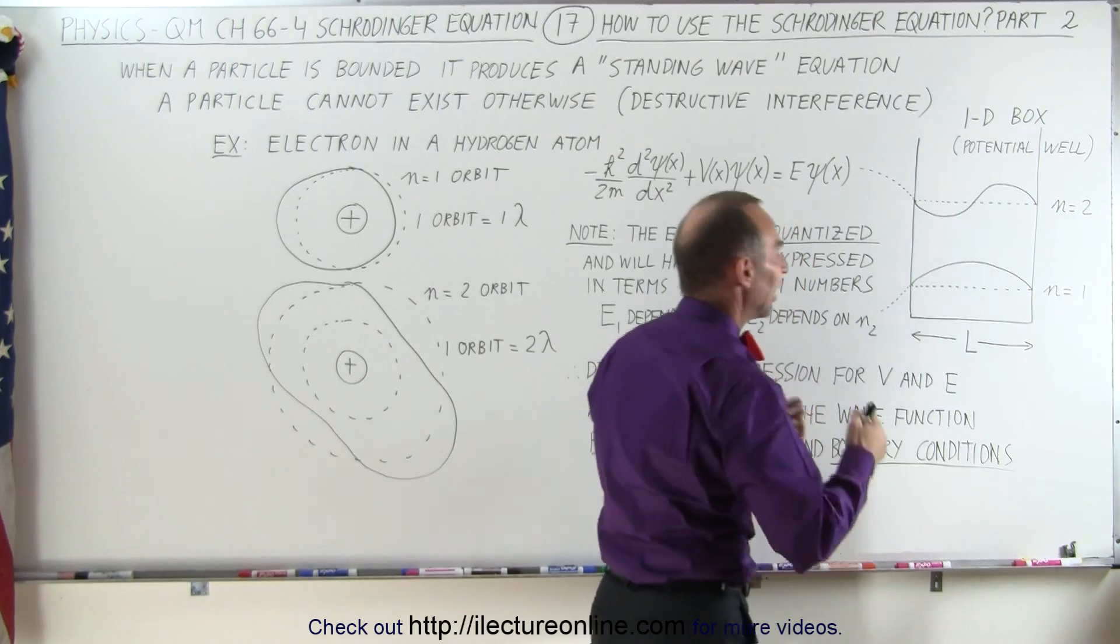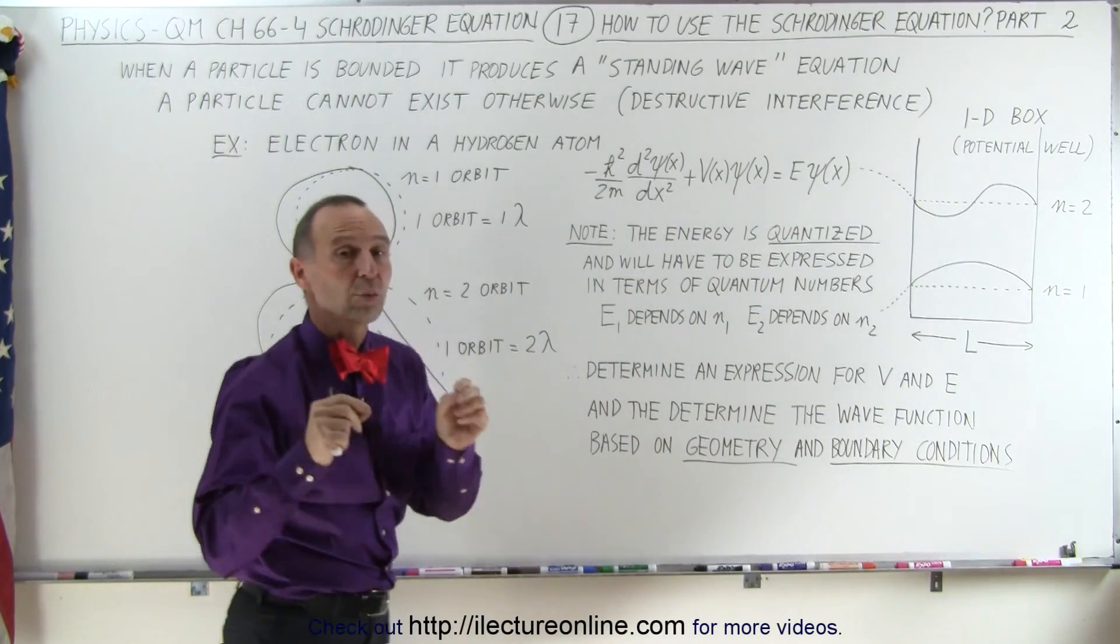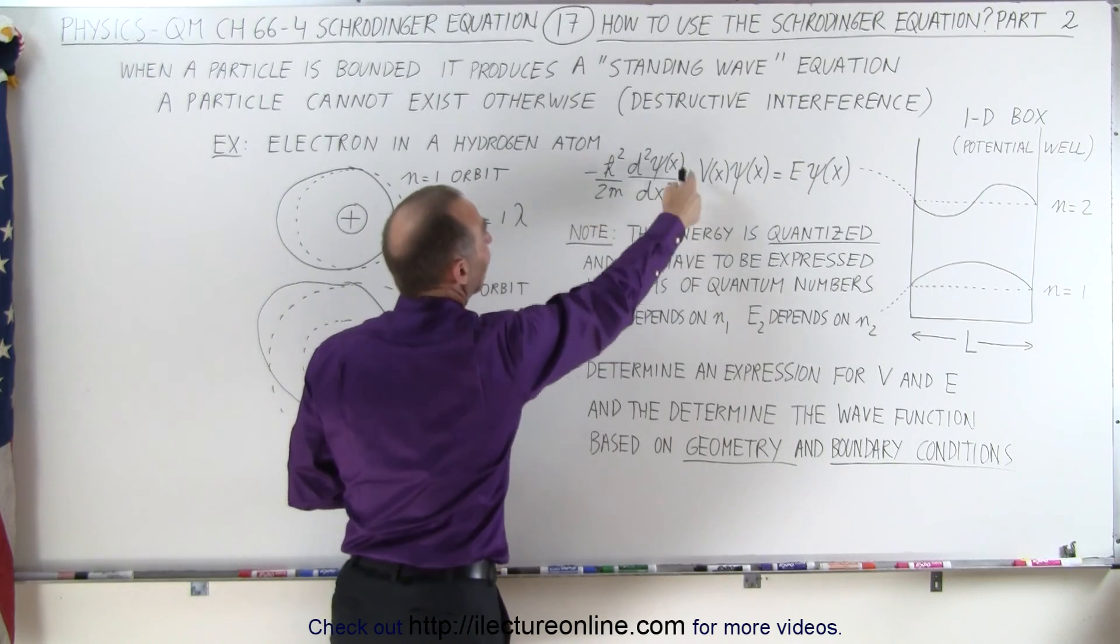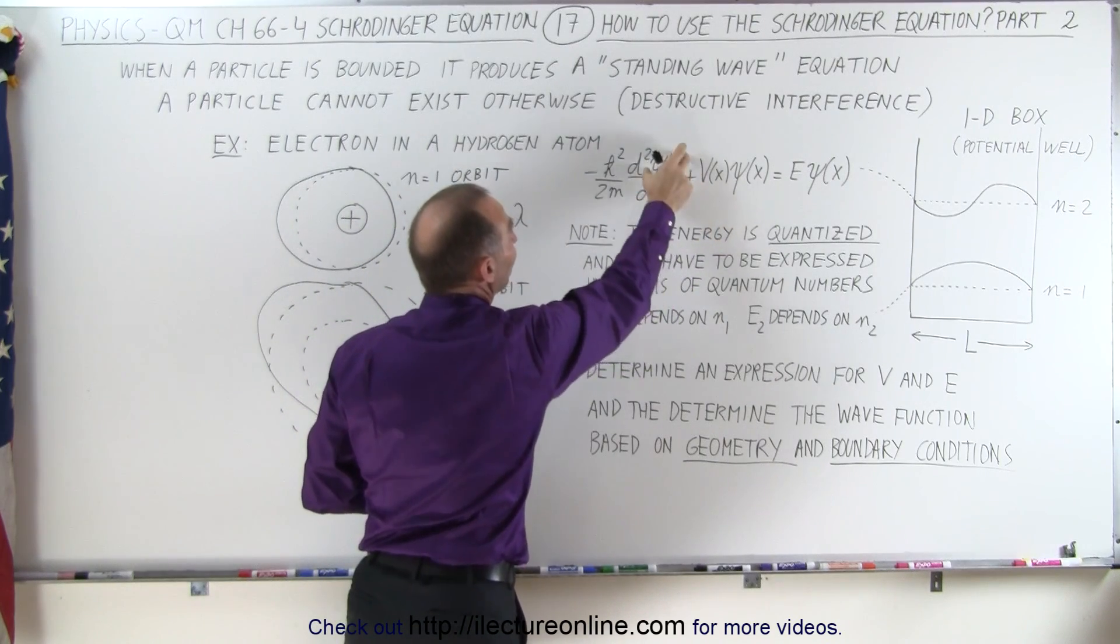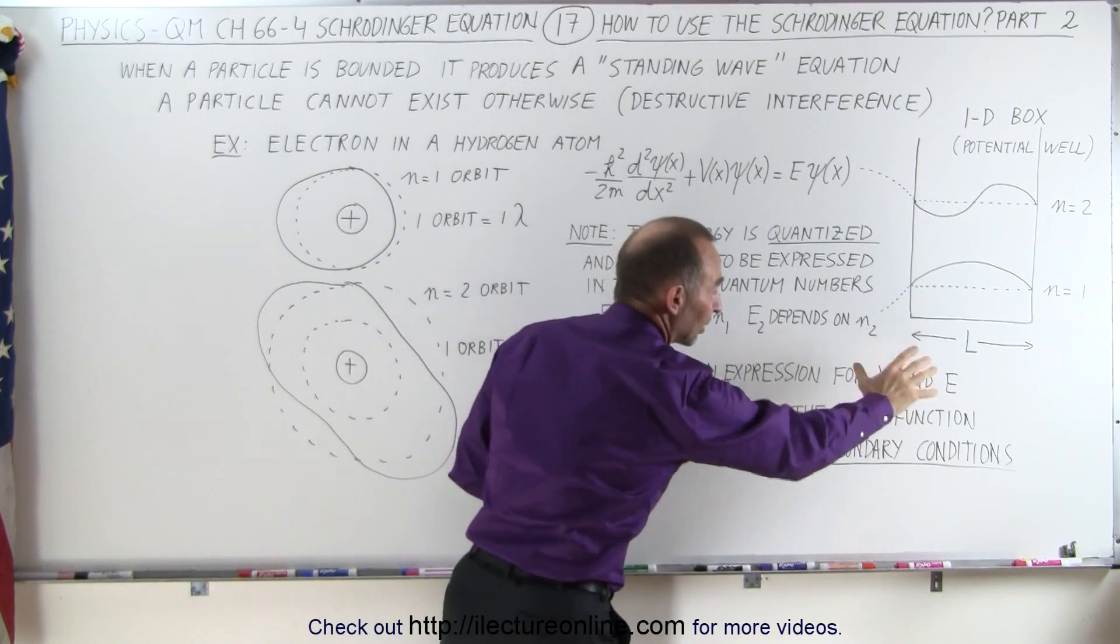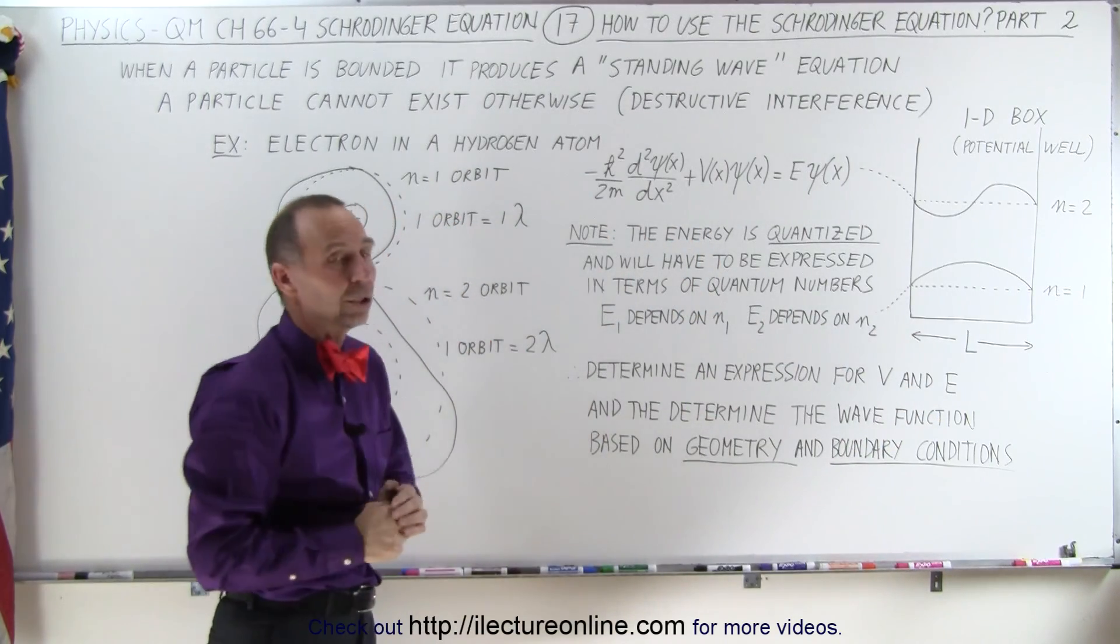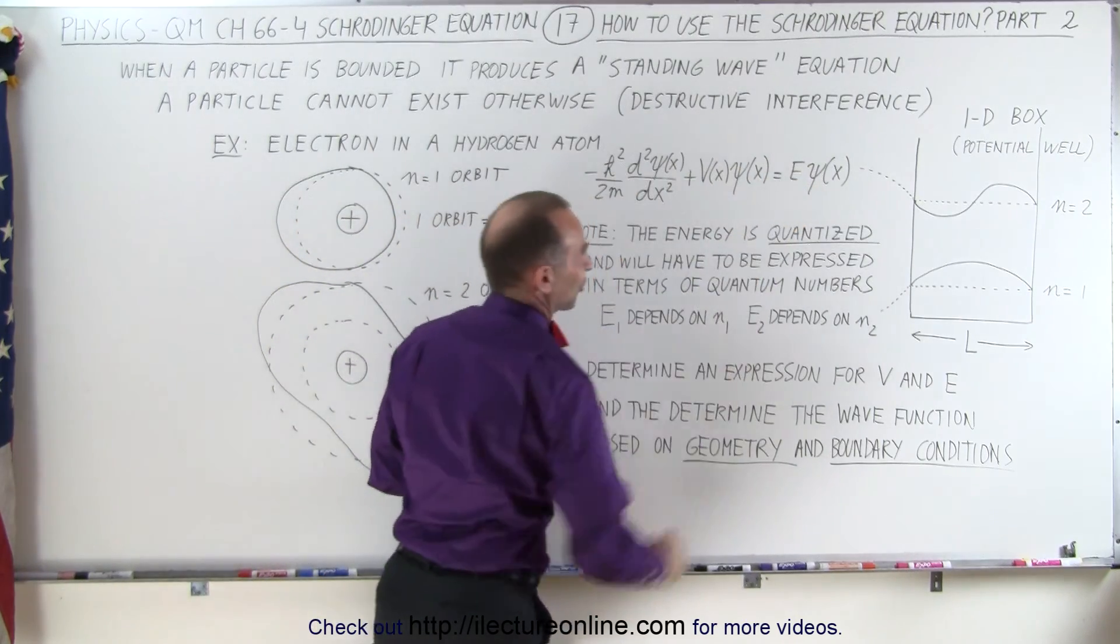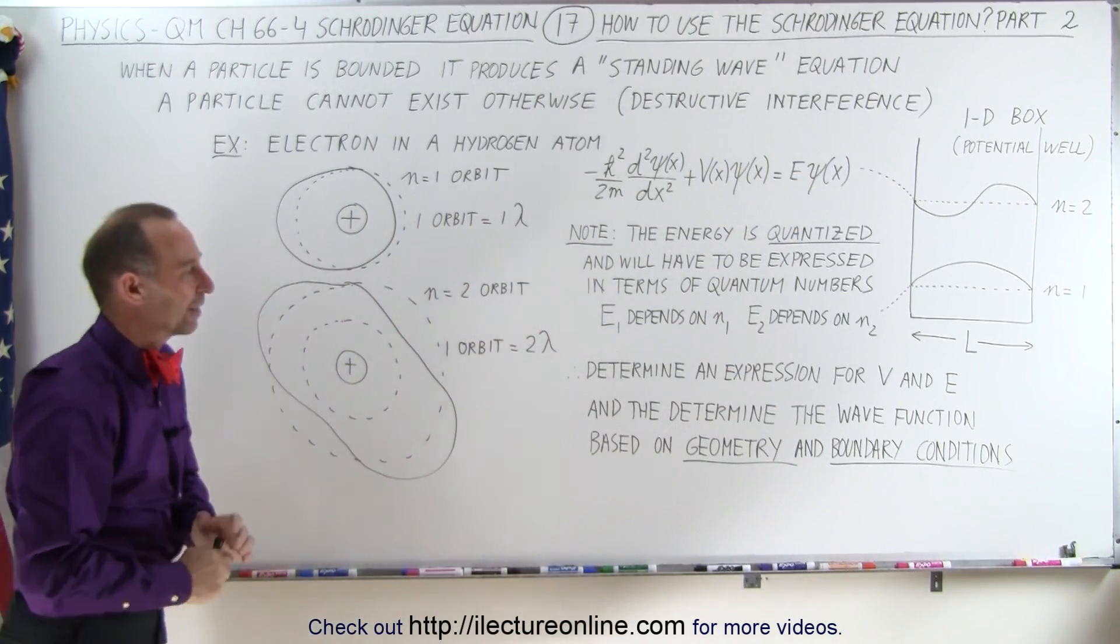To determine the potential energy, the kinetic energy, and the total energy of the particle, which will then enable us to find the Schrödinger equation and use the Schrödinger equation to find the wave equation. Or better yet, once we have determined the potential, kinetic, and total energy of the particle, we should be able to figure out the wave equation using the Schrödinger equation.